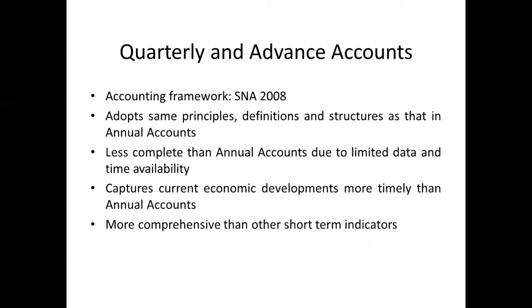The IIP data reflects changes in industrial production. We can draw inferences about the growth or decline in the manufacturing sector using IIP data, whereas Quarterly Data reflects the overall health of the economy as a whole.